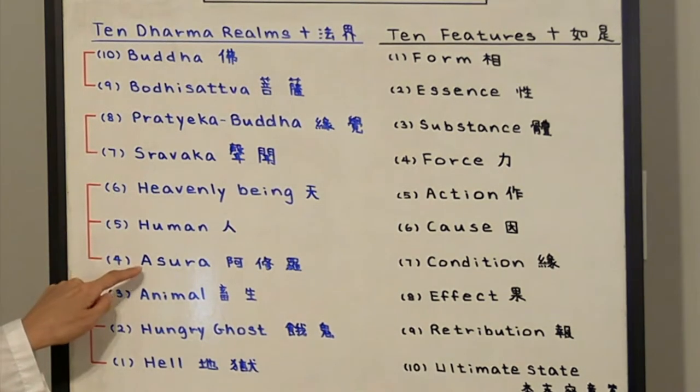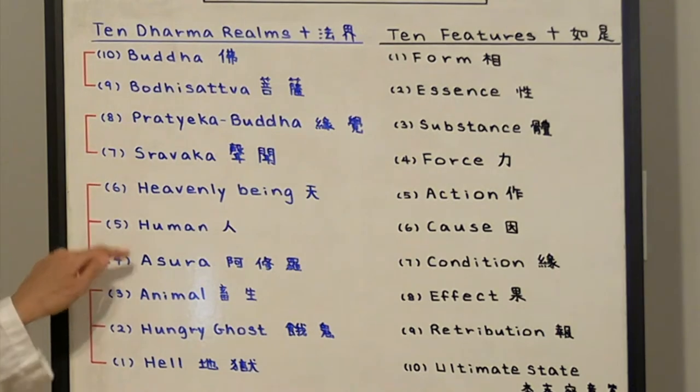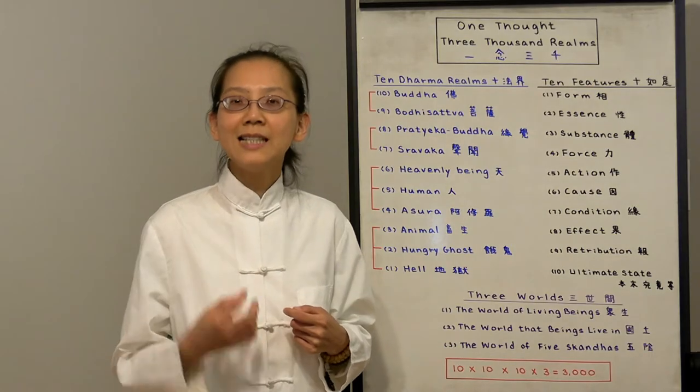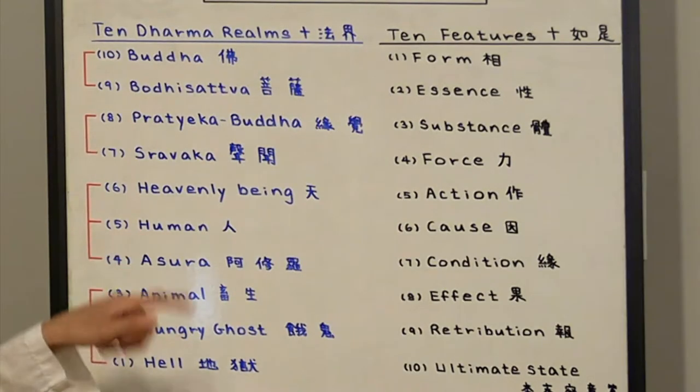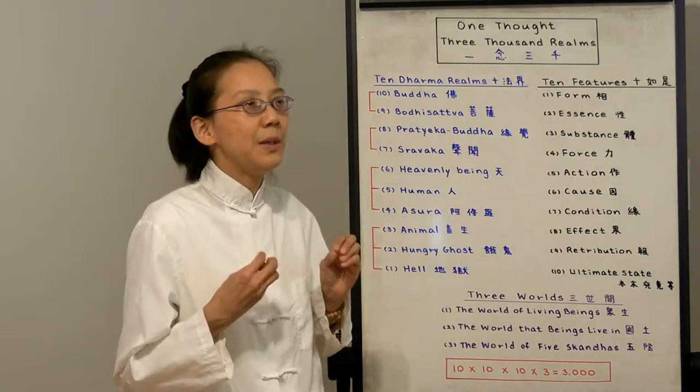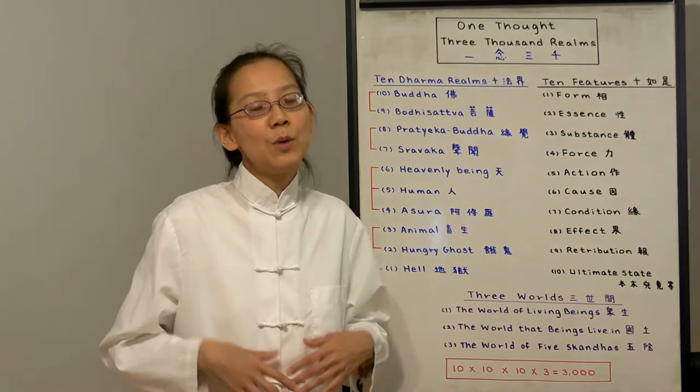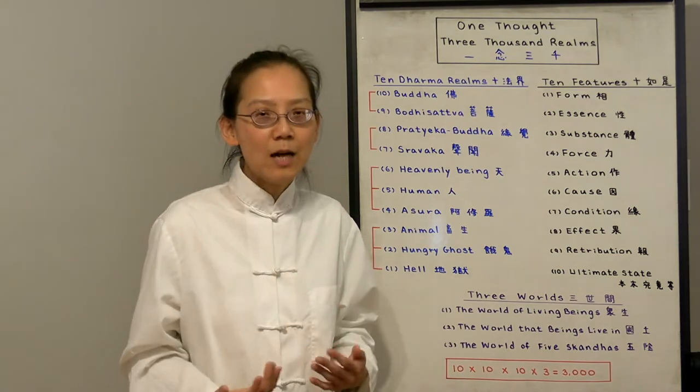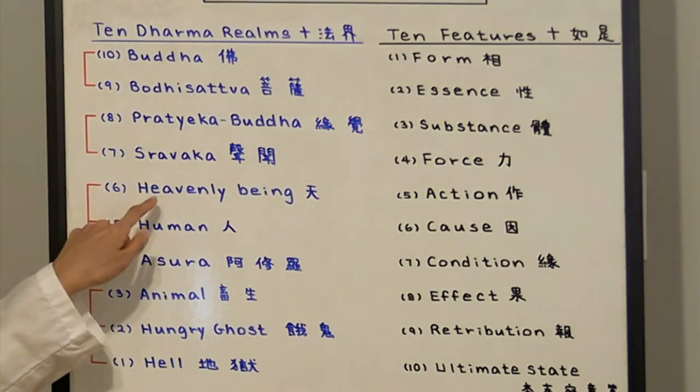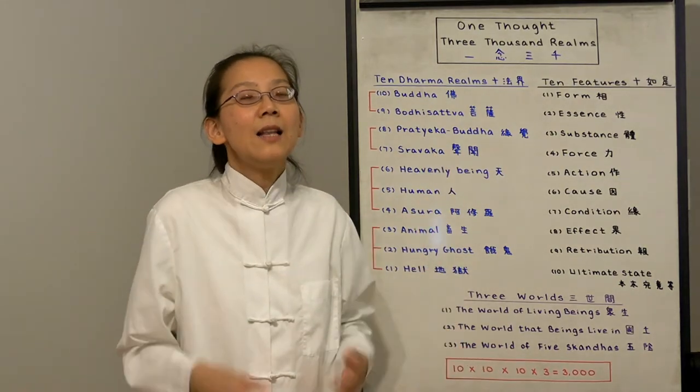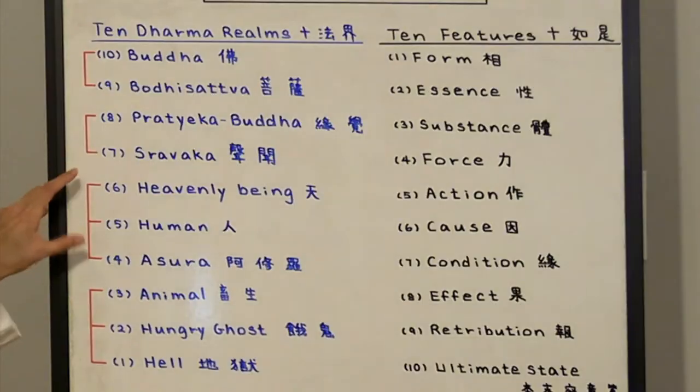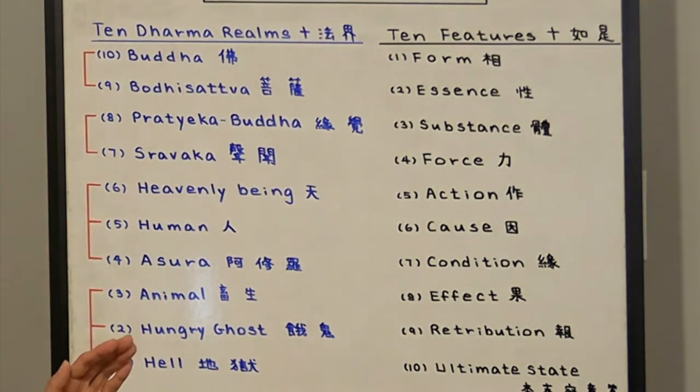Then we have number four, Asura realm. They do good deeds but they are jealous and belligerent in nature. Number five, human—we are the only realm that can be enlightened but we're burdened with desires and doubt. Number six is heavenly beings. They are always wealthy, happy, and have very long lives. These are the three higher realms. These consist of the six realms of reincarnation.